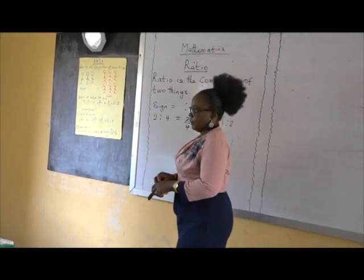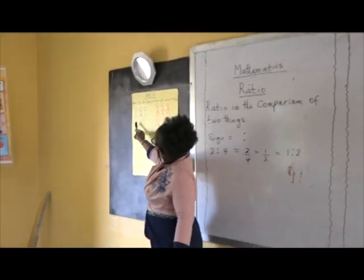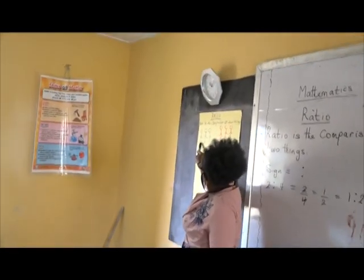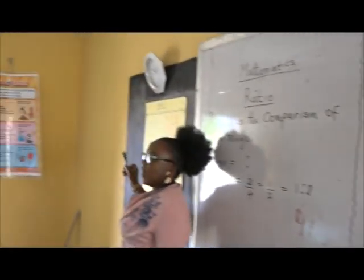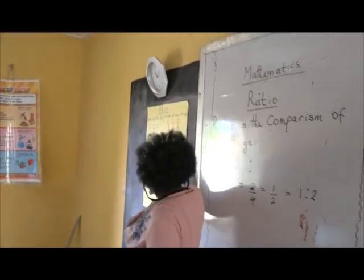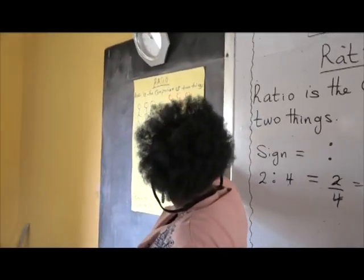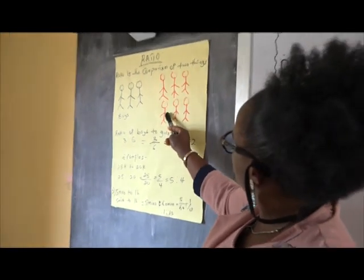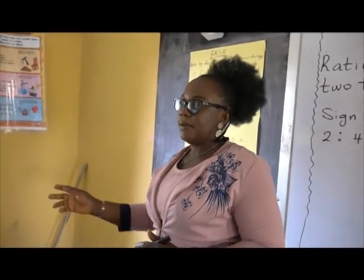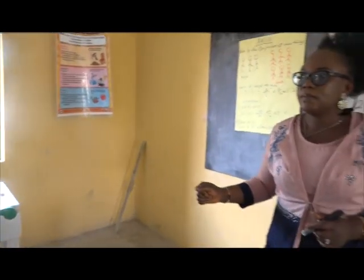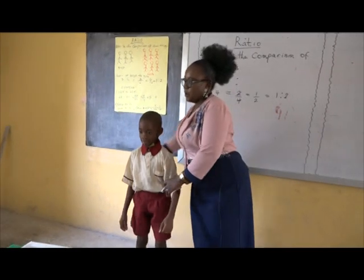Look up everybody. We have how many boys? Three boys. And let's count the number of the girls: one, two, three, four, five, six. Walade, Israel and Emmanuel — three of you stand there.